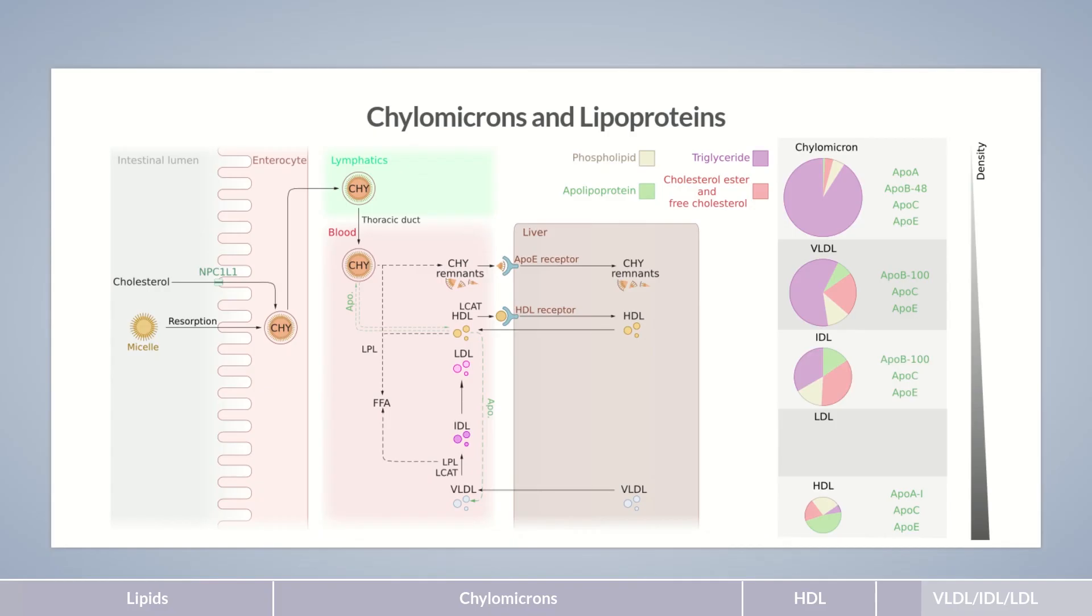IDL particles are formed, though only temporarily and in low concentrations. Due to the two enzymes' progressive activity, as well as the transfer of ApoE and ApoC2 to HDL, the IDL particles are finally converted to LDL. ApoB100 remains completely preserved during the conversion of VLDL to LDL via IDL.